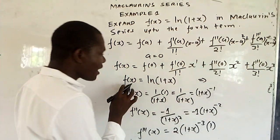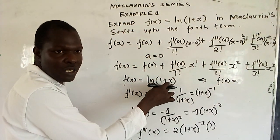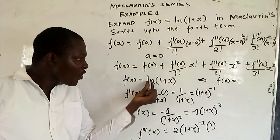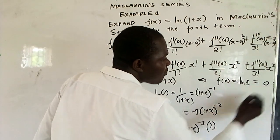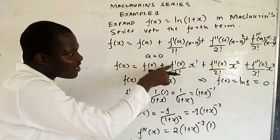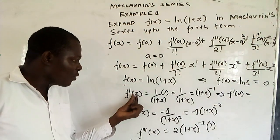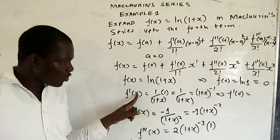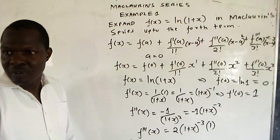We have f(x) = ln(1 + x), but we don't need f(x), we need f(0) — meaning where x appears, we put 0. So f(0) = ln(1 + 0) = ln(1), and ln(1) = 0. Then f'(0): putting 0 into f'(x) = 1 over (1 + x) gives 1 over (1 + 0) = 1 over 1, so f'(0) = 1.